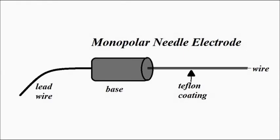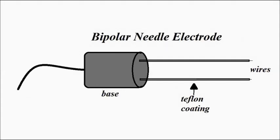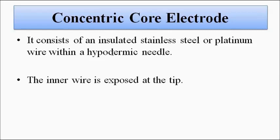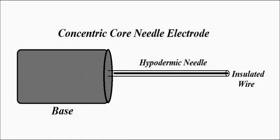Next is the concentric core electrode. It basically consists of a stainless steel or platinum wire placed within a hypodermic needle. It has a needle, and inside that needle there is an insulated stainless steel or platinum wire. Again, the wire is exposed at the tip because it has to be inserted and must facilitate signal flow.